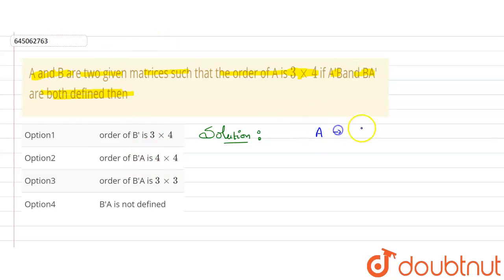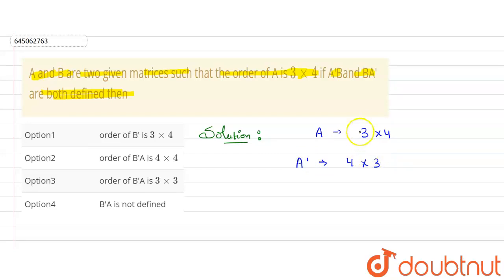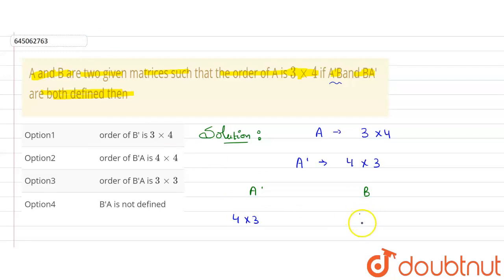The order of A is 3×4. Now, what will be the order of A'? For the transpose A', we swap rows with columns, so it will be 4×3. Now it is given that A'B is defined. So we have the order of A' as 4×3.